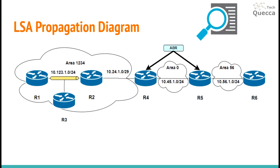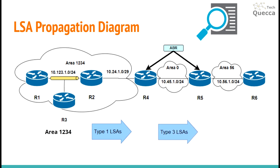Let's review this example. We have a network with area 1234, area 0, and area 56. These two routers are ABR routers. Area 1234 generates a Type 1 LSA. R4 receives the Type 1 LSA, creates an LSA Type 3, and forwards it to R5. When R5 receives the Type 3 LSA, it creates a new Type 3 LSA, lists itself as the originating router, adds the metric cost for this network to the metric cost from the original Type 1 LSA, and forwards it to R6.